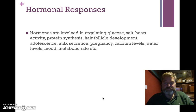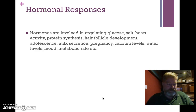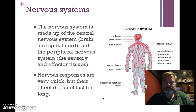The effect of hormones tends to be long-lasting but slow, because it relies on the blood system to move them around. We use hormones to regulate glucose, salt, heart activity, protein synthesis, hair follicle development, adolescence, milk secretion, pregnancy, calcium levels, water levels, mood, and metabolic rate. Hormones are busy doing all sorts of things all the time.